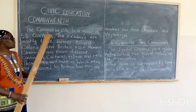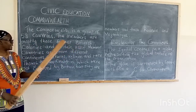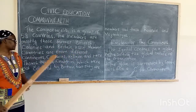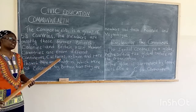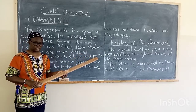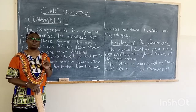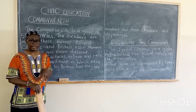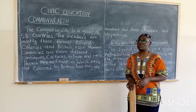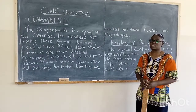The Commonwealth is a group of 53 countries. The members are mostly those who are formerly colonized by Britain, as well as Britain itself. The member countries are from different continents and they have different cultures. They belong to different religions and they are people of different races. It is important to also note that there are two countries that joined the Commonwealth and were not colonized by Britain: Mozambique and Rwanda. They joined the Commonwealth because they wanted to work with it.